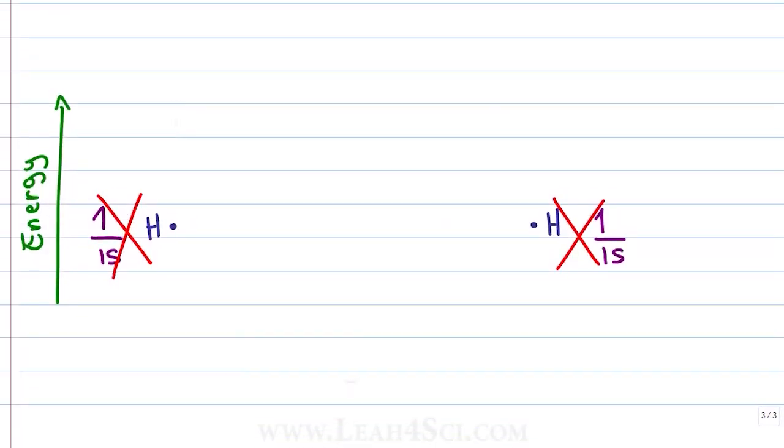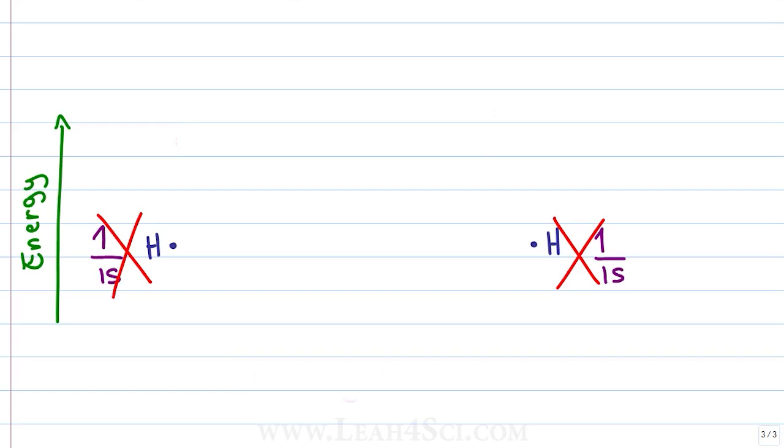So where does this go on the energy diagram? We have the low energy bonding molecular orbital and we have the high energy antibonding molecular orbital where the bonding is a sigma bond and the antibonding is a sigma star.